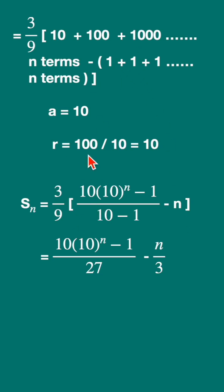Let us substitute using the formula. So 3 upon 9 bracket a into r raise to n minus 1 upon r minus 1. So a is 10, r is 10. So 10 into 10 raise to n minus 1 upon 10 minus 1, minus this is n, so write down minus n.